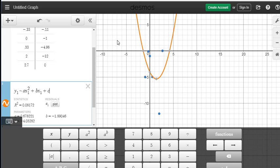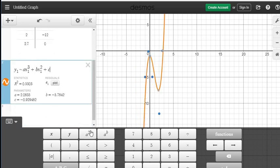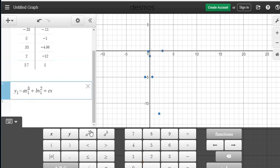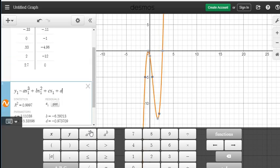Now let's look at a cubic model. I'm going to change this to a three, put a squared on this one, and then add x1 plus d. If you look at this, you can see this almost perfectly goes through all those points. We can see that r squared is 0.9997, which means 99.97% of the data fits this model.